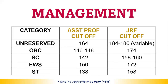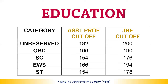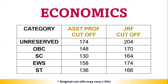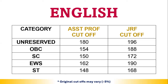For Education, the AP cutoff is 182 and JRF will be 200 — other categories can check accordingly. For Economics, the AP cutoff is 174 and JRF is 204. For English, the JRF cutoff is 196 and above — other categories can verify their respective cutoffs.